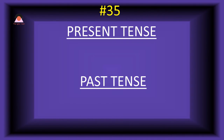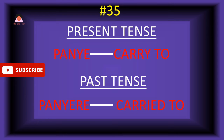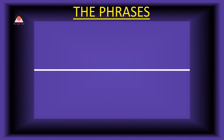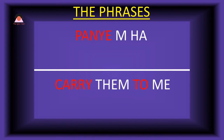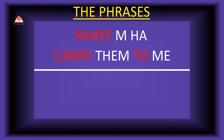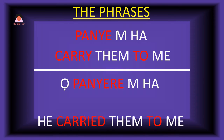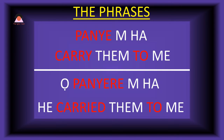Word number thirty-five: 'panye,' meaning 'carry to.' The past tense of panye is 'panyere,' meaning 'carried to.' Present tense phrase: 'panye m'ha' — carry them to me. Past tense: 'o-panyere m'ha' — he carried them to me.